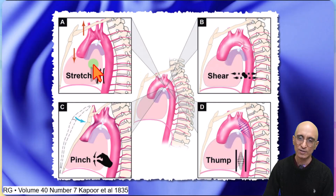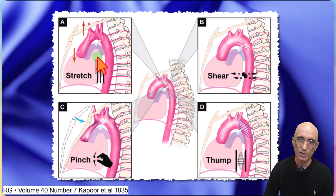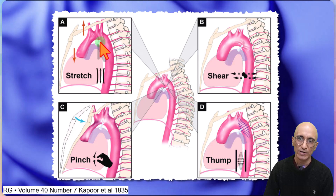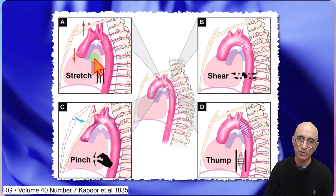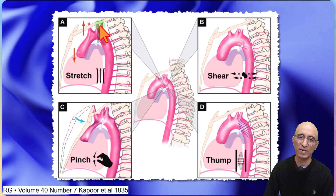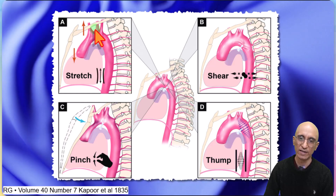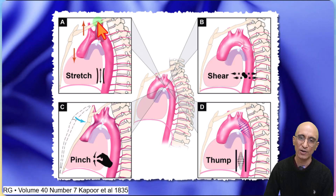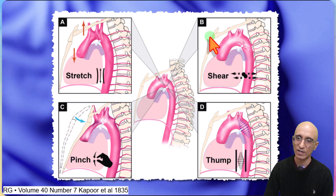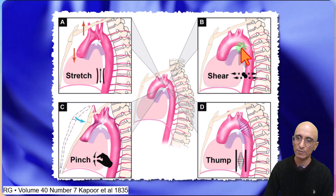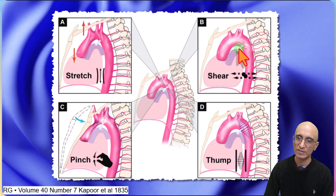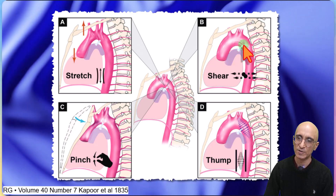The aortic transection can be due to stretching in the setting of hyperextension of the neck and the aortic arch vessels pulling the thoracic aorta, or it can be due to shearing injury at the site of fixation of the aortic isthmus by the ligamentum arteriosum.